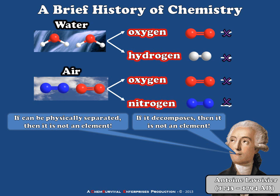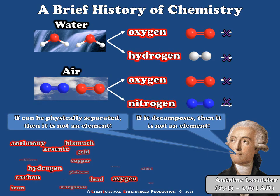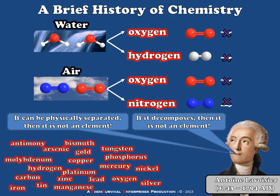Lavoisier and his contemporaries continued work in this vein and were able to catalog approximately two dozen elements by the time of his death in 1794. But modern chemists don't simply report these elements as a list — we've come to a better understanding of how to organize them. To understand how that happened, we have to jump forward by about a century.